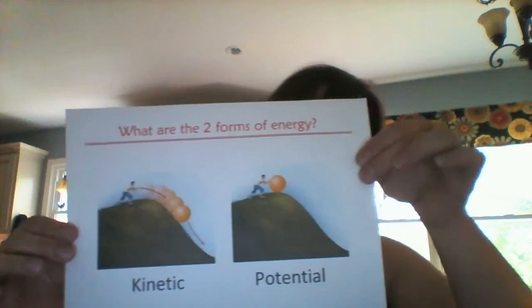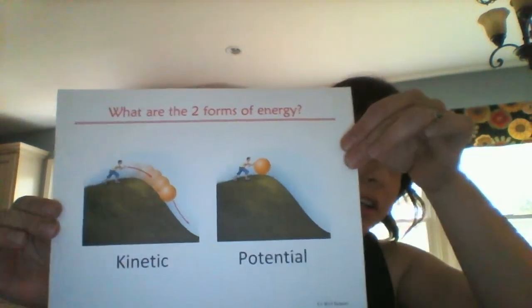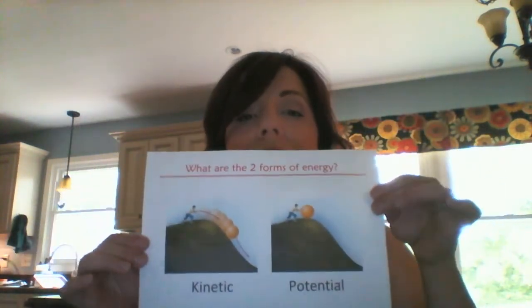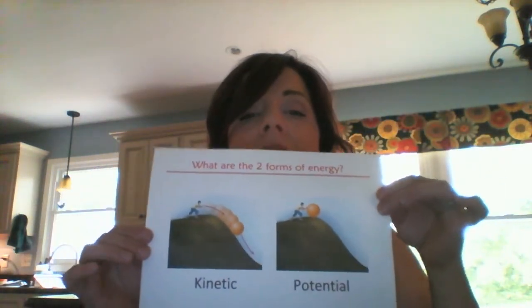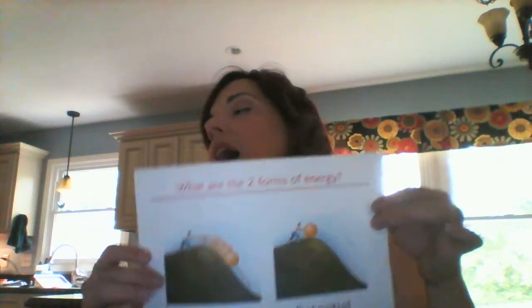So anyway, our two presentations that we're going to do for the end of year celebration are week 15 and week 17 for science. For week 15 science, it's 'What are the two forms of energy?' — and this is going to appear backwards on your screen for some reason — but anyway, kinetic and potential, and how we did that in class.